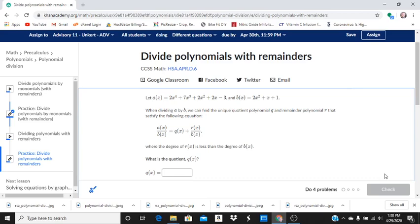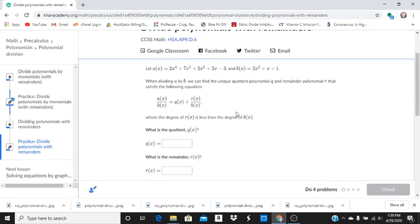In this first example, we have a of x equals 2x to the fourth plus 7x cubed plus 2x squared plus 2x minus 3, and b of x equals 2x squared plus x plus 1. We're going to divide a by b and write it in this form where we have q of x plus the remainder over b of x.